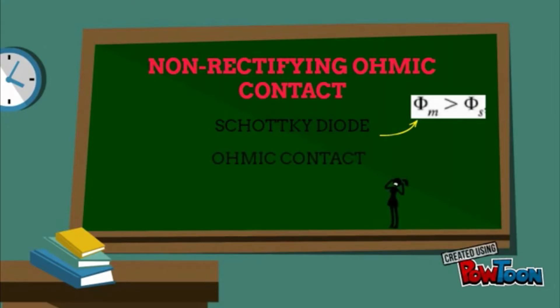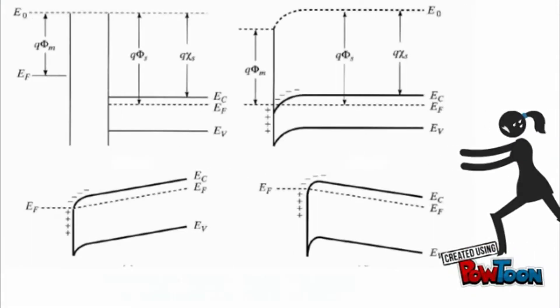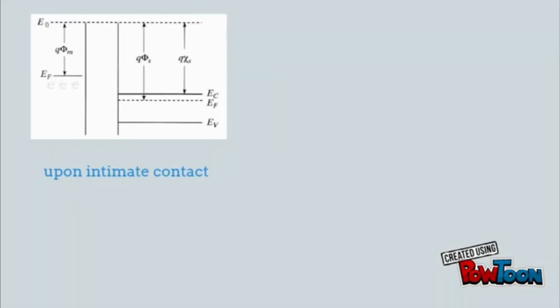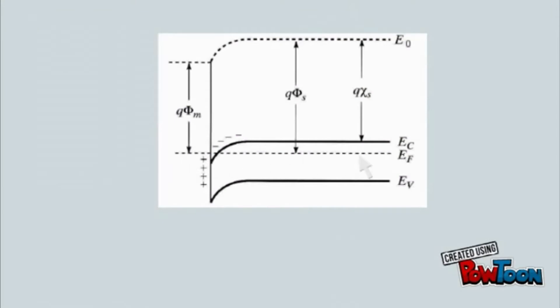An ohmic contact is formed when the metal work function is smaller than the N-semiconductor work function, with φM smaller than φS. This is the energy band diagram for the metal and N-semiconductor when isolated and when in contact. At intimate contact, the electrons flow from the metal to the semiconductor until thermal equilibrium is reached and the Fermi levels are aligned. This is because of the smaller work function of the metal.